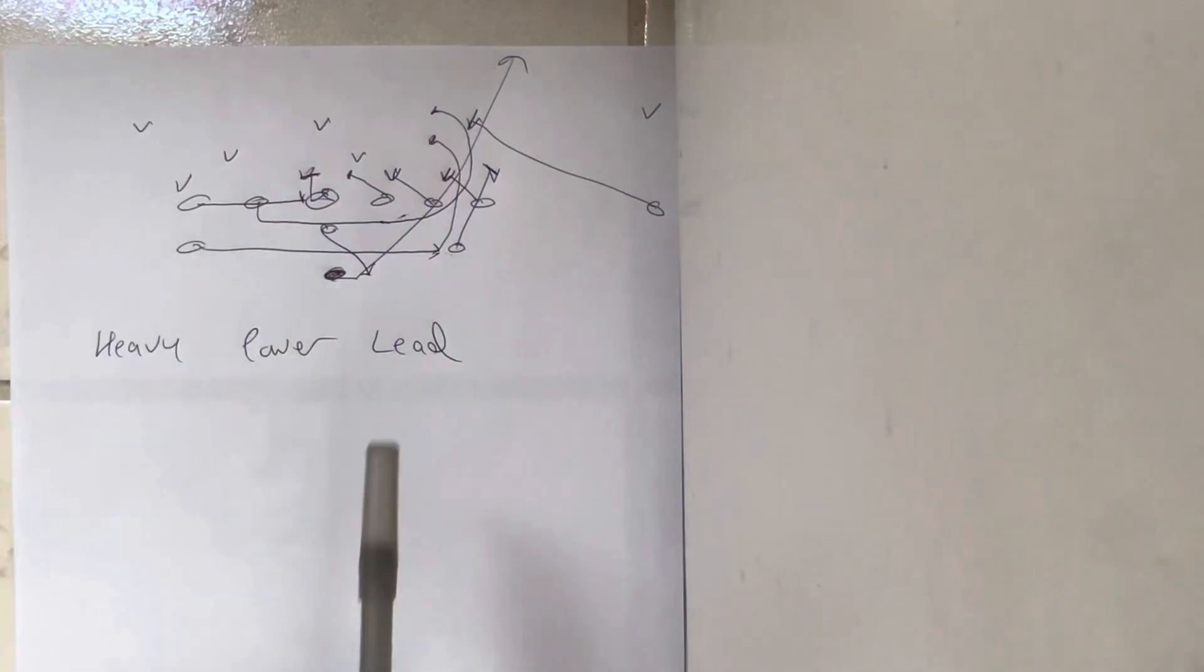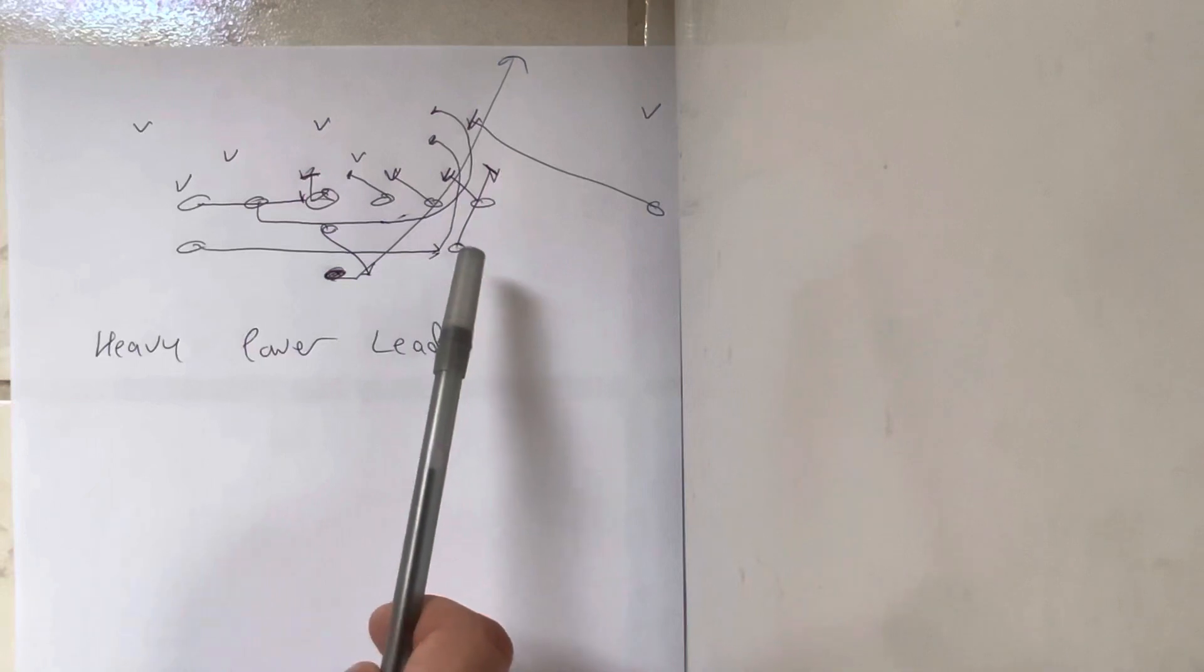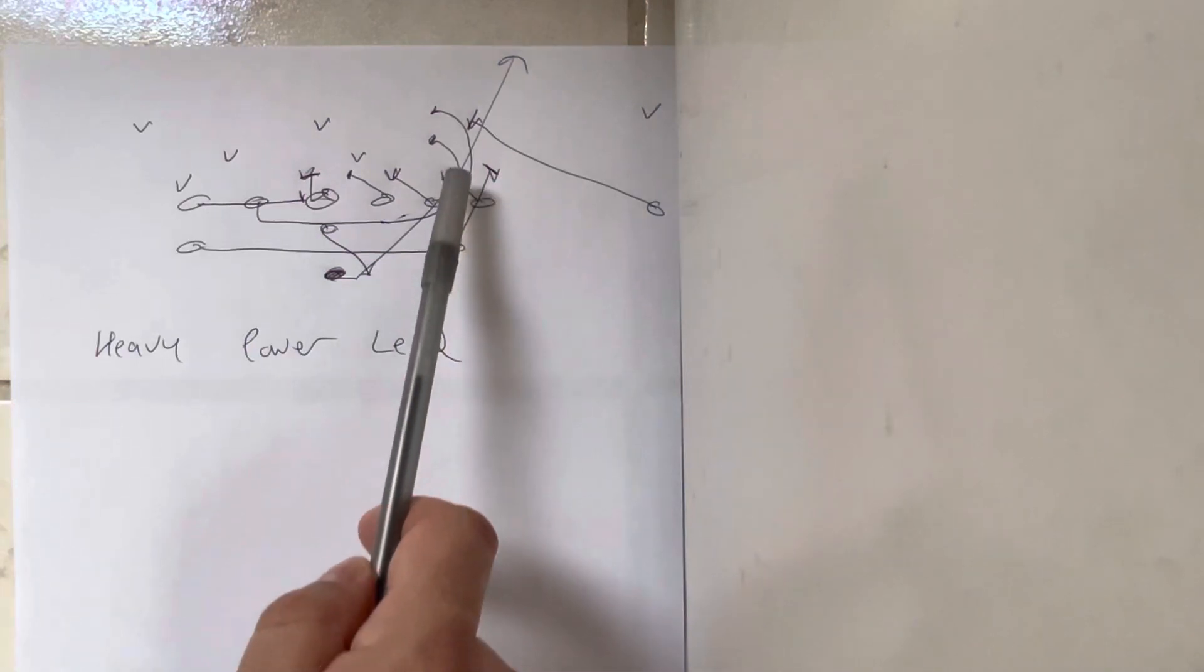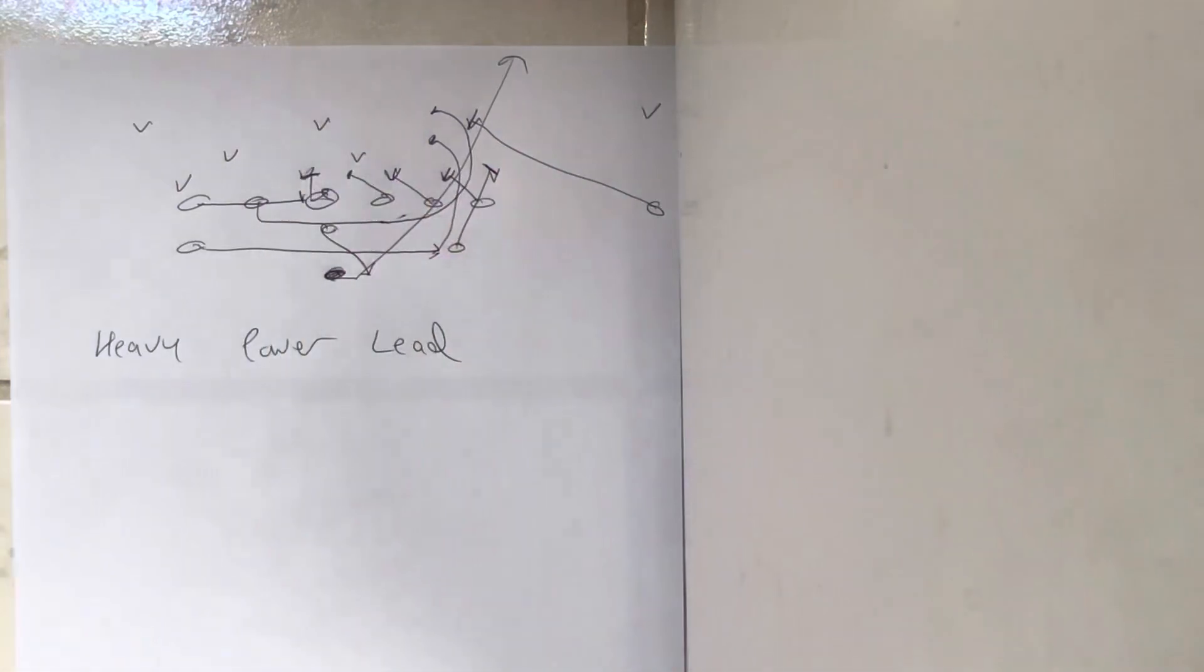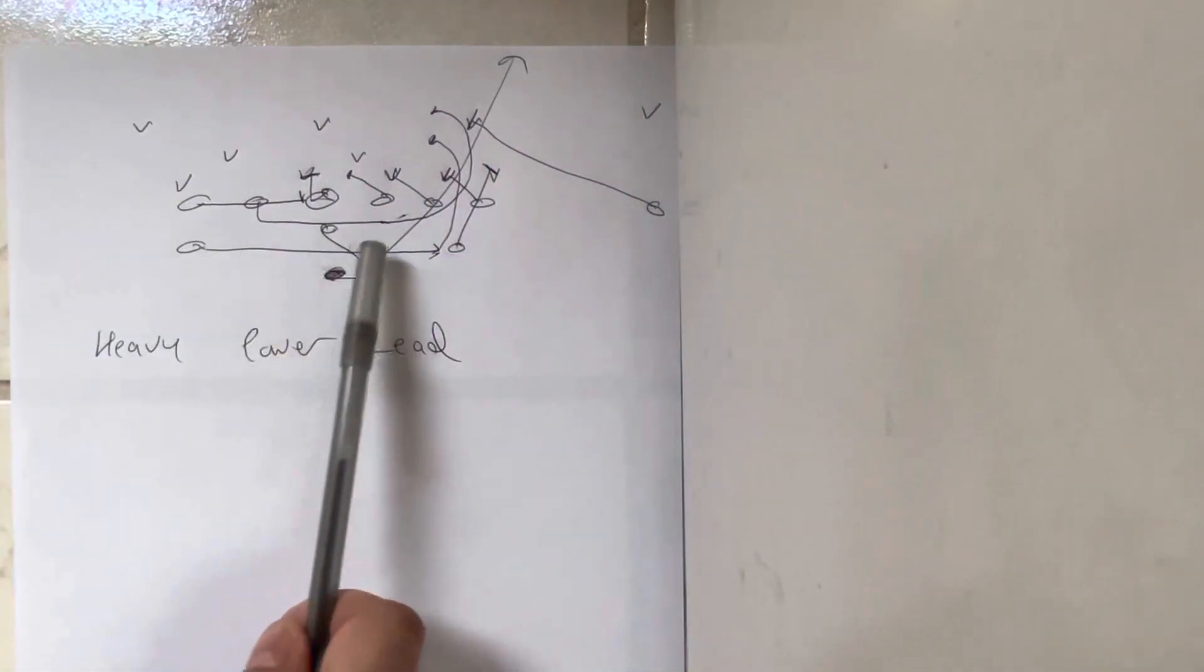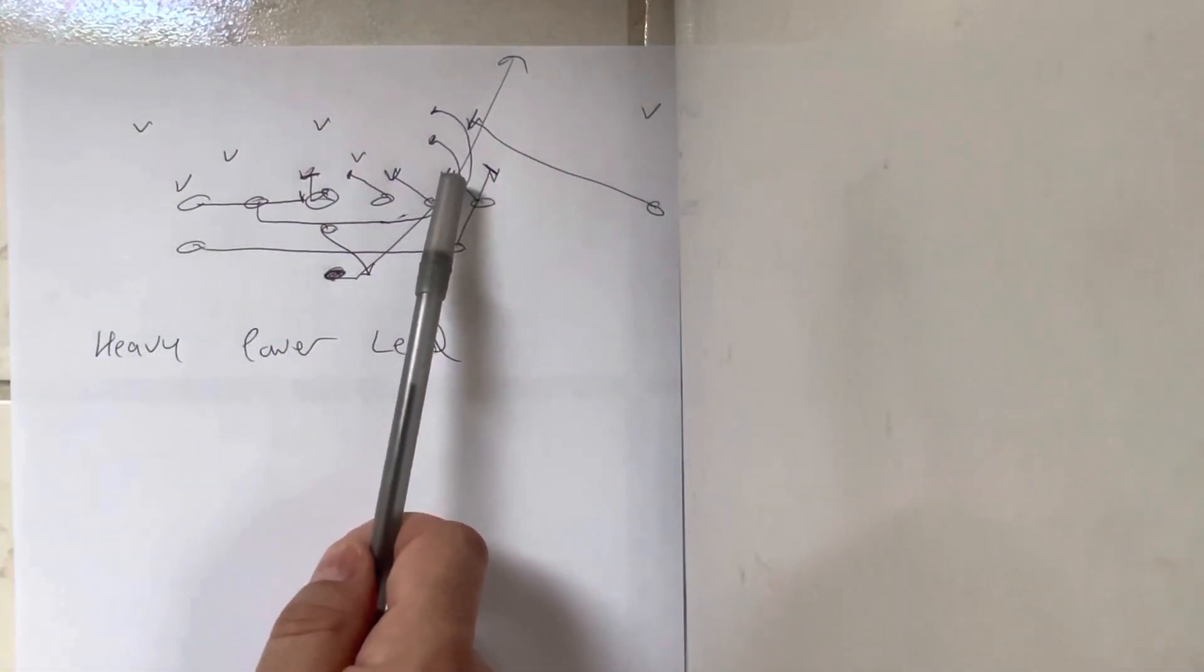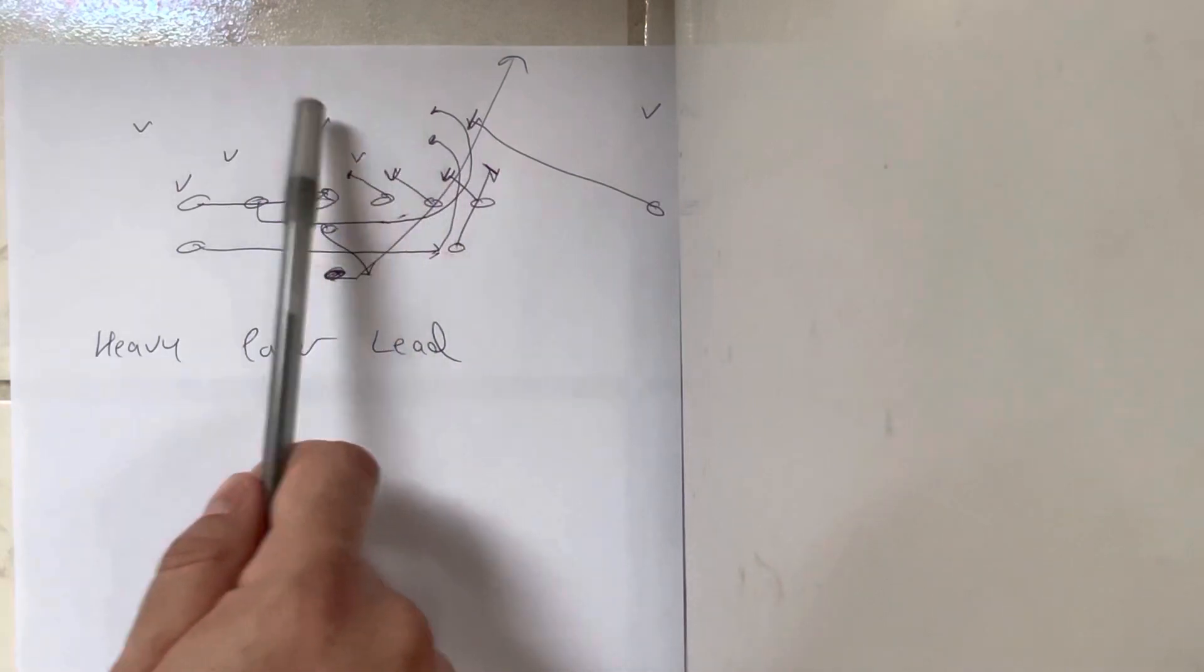Then the A-back that goes in motion doesn't turn up until the ball is snapped. He turns up inside the block. He's going to wall off the mike. If the mike blitzes, he's on the safety. The guard's going to pull around, hug the block of the heavy tackle, and clear the level—second level to third level.